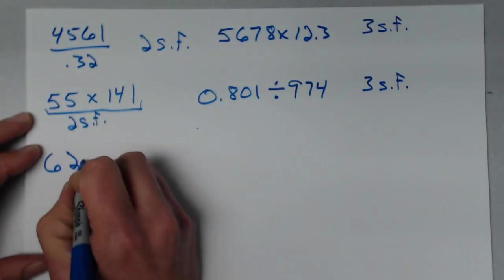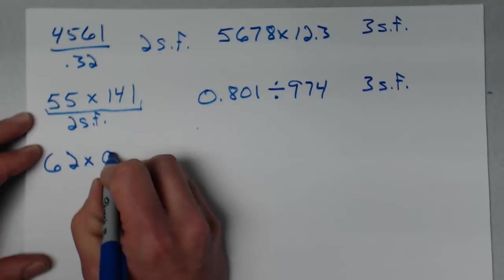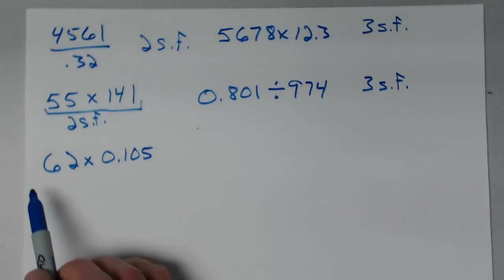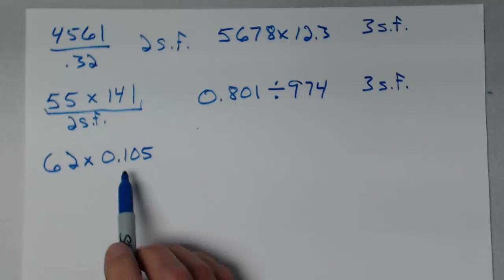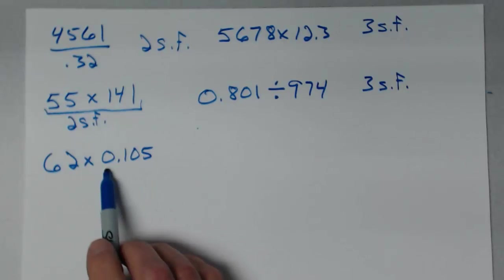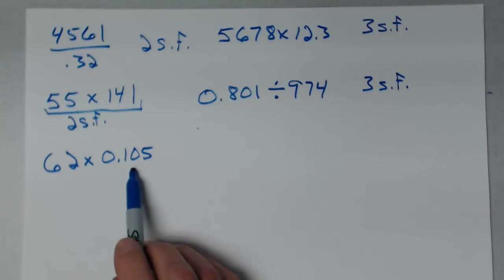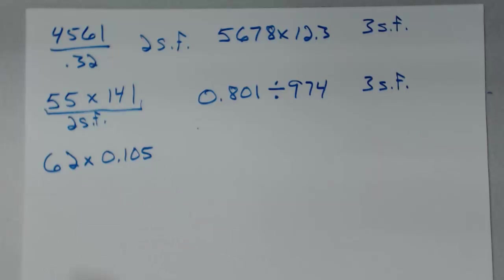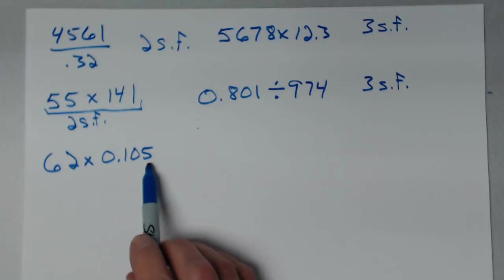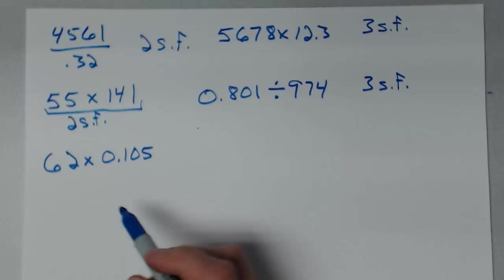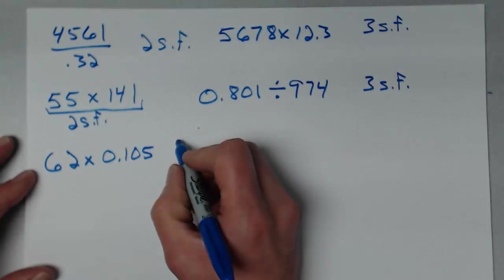Next: 62 times 0.105. I have two significant figures in 62 and three in 0.105. Remember, the leading zero in 0.105 is not significant, but the middle zero between the 1 and 5 is significant because it's between two significant figures. So 0.105 has three significant figures, but 62 has two, so I can keep only two significant figures in the result.